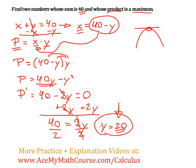Now we only have one number, the y. What is the other number? What's x? x equals 40 minus y.